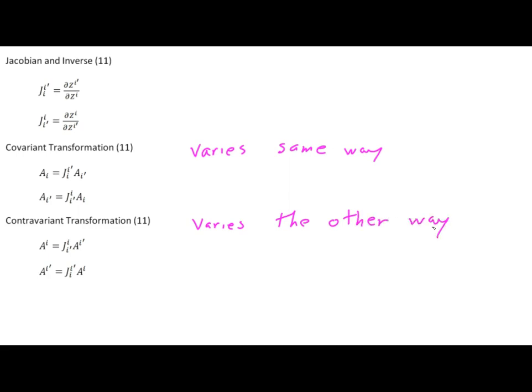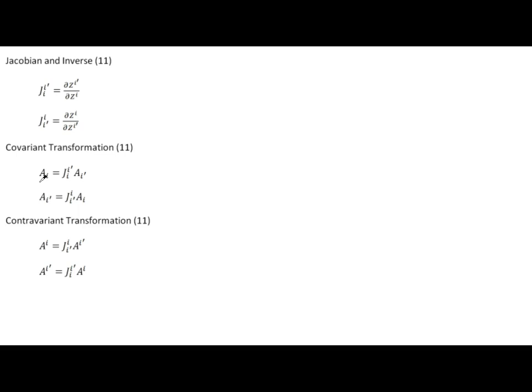We're going to find that almost every derivative object in tensor calculus going forward fits into one or the other of these two categories — either covariant or contravariant. Anytime you see an index in the upper position, you know we're talking about a contravariant object, and when you see it in the lower position, we're talking about a covariant object. Hopefully all this will make a lot more sense next time as we look at some real live examples of the Jacobian.